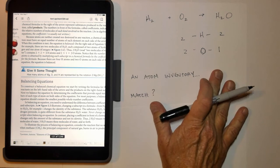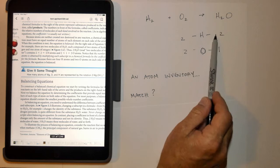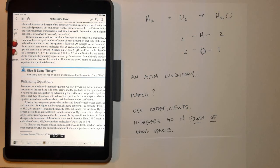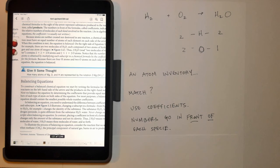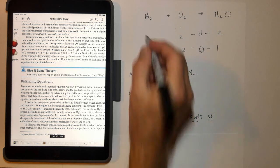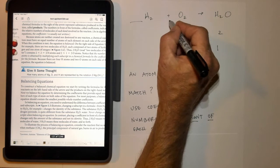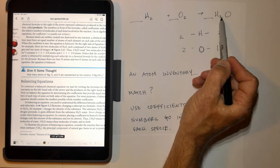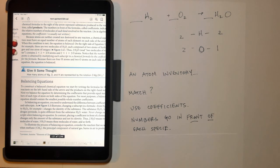In balancing equations, we want to make sure that these numbers match on each side. To balance equations, we use coefficients. Coefficients are numbers that go in front of each one of the species. Numbers that go in front right here or in front right here or in front right here. We can't write little numbers down below because those are the composition of the substance in itself, but we can write numbers in front of.